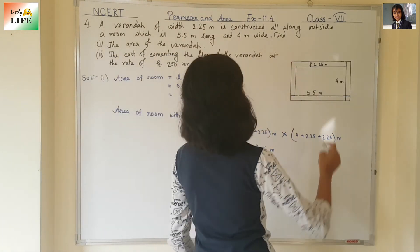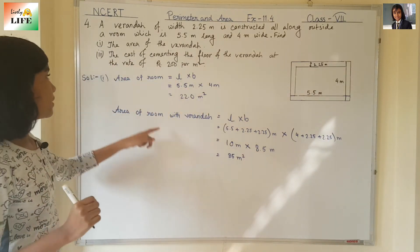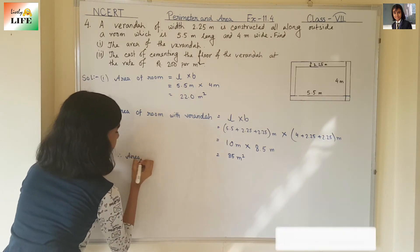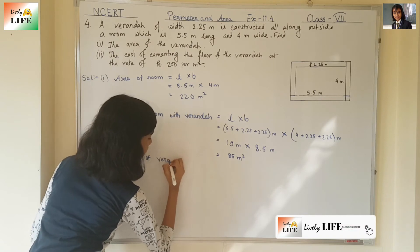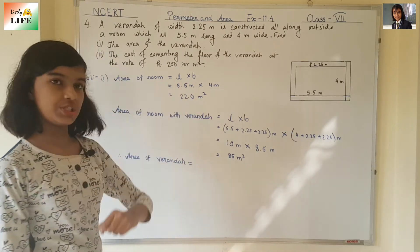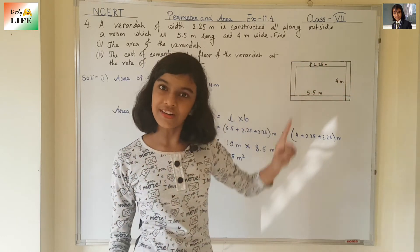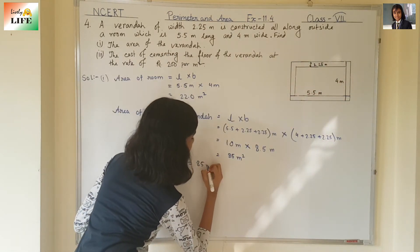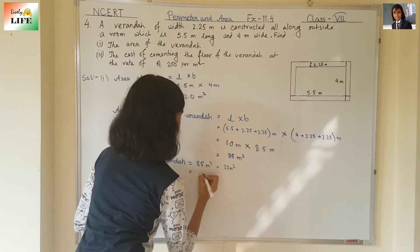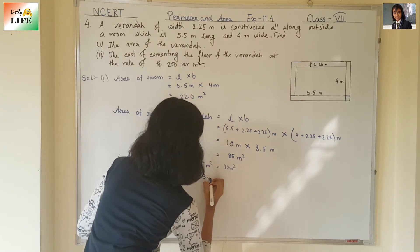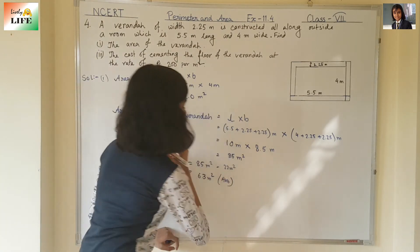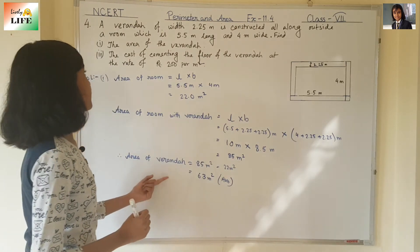This is the area of the room along with the veranda. Now from here we are going to find the area of the veranda: 85 minus 22 equals 63 meter square. This is the answer for number one. So we have completed number one.